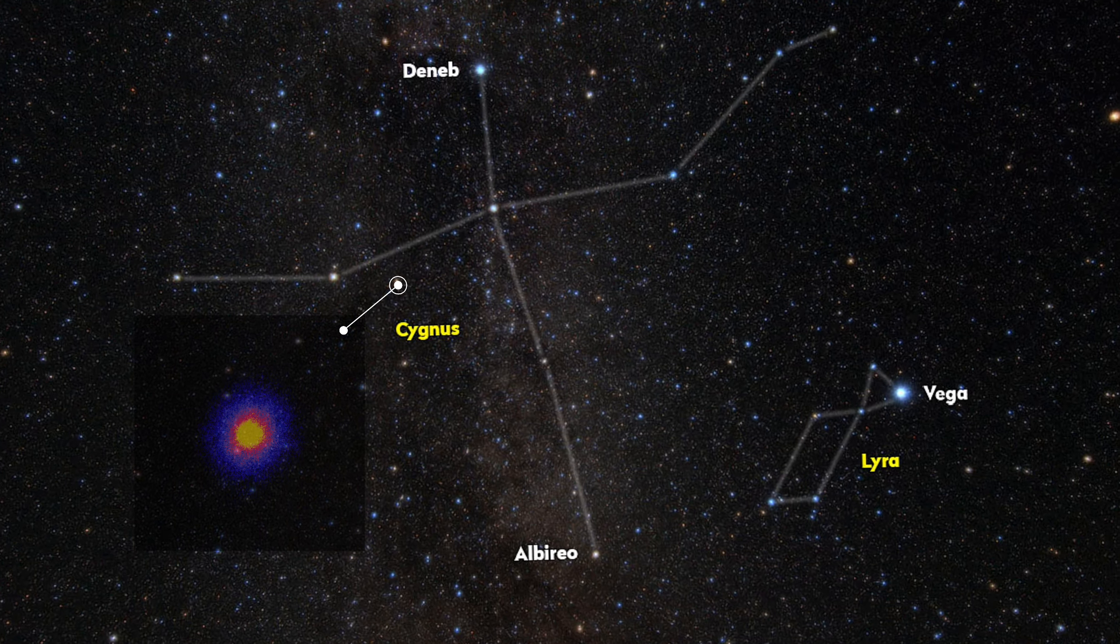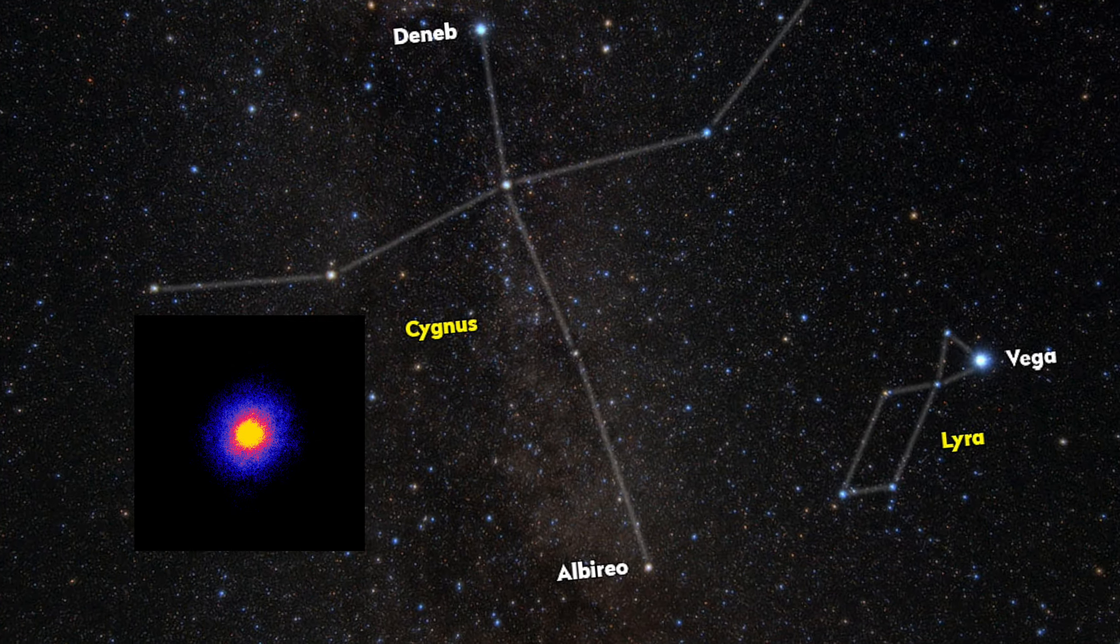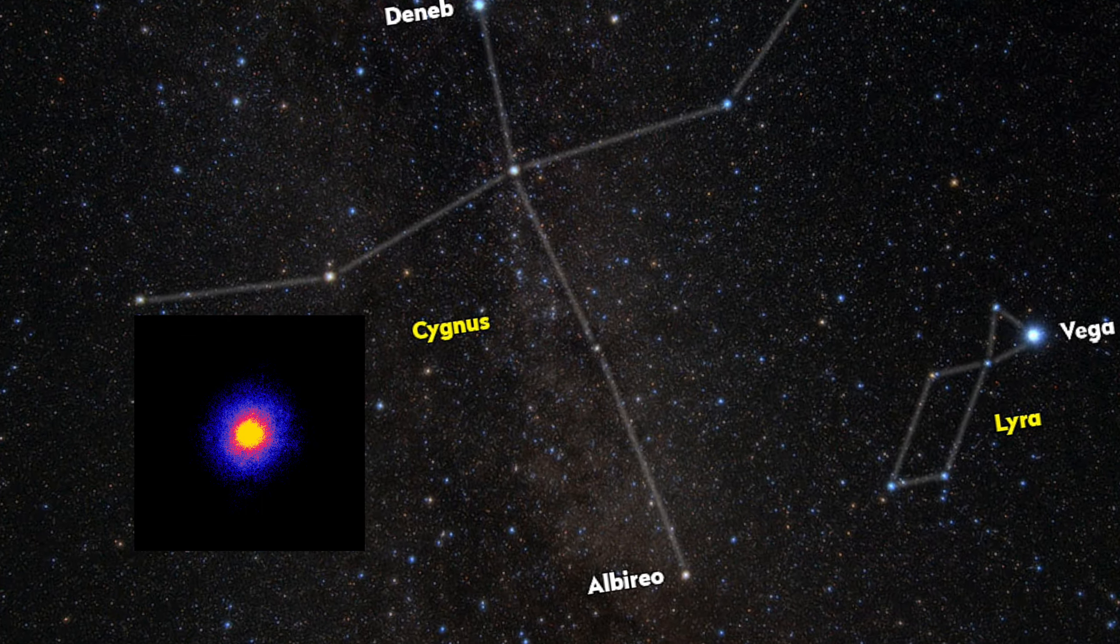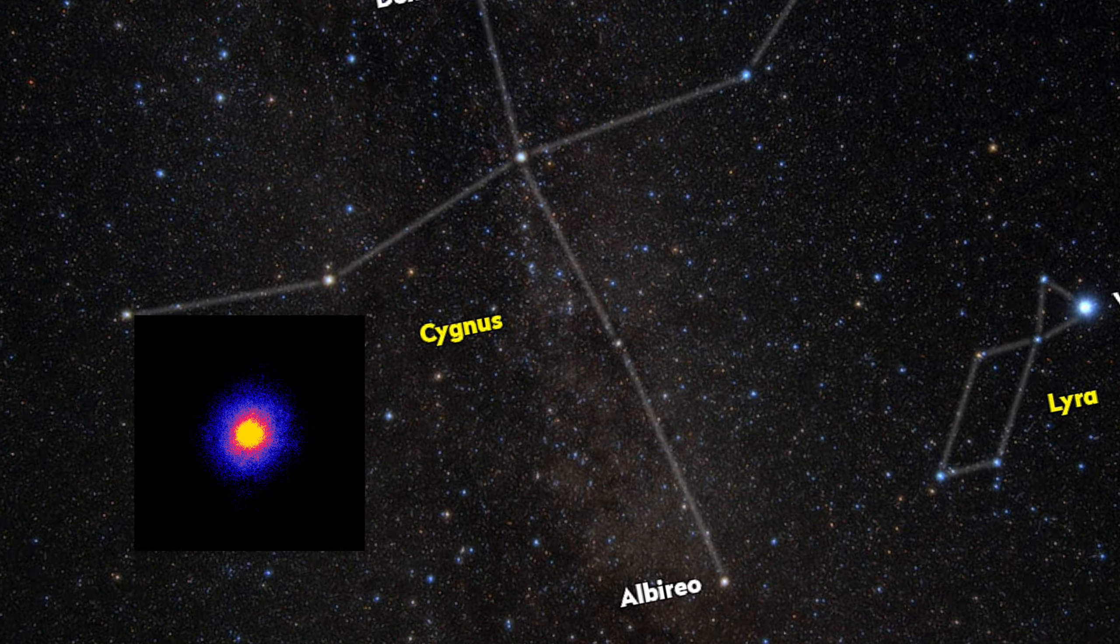Cygnus X-1, a galactic X-ray source discovered in 1964, became the first astronomical object commonly accepted to be a black hole.